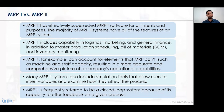MRP2 is capable of performing activities in terms of logistics, marketing, and general finance. Additionally, master production scheduling, billing of materials, and inventory monitoring are undertaken in MRP1. MRP1 covers only a limited range of activities, whereas MRP2 undertakes several advanced-level activities — whether related to logistics, marketing, finance, or both inside and outside the organization.